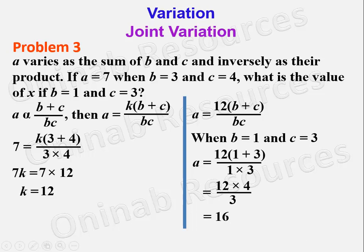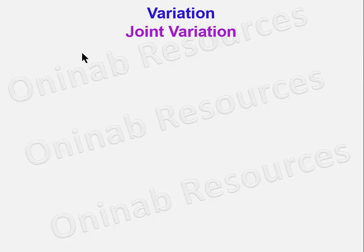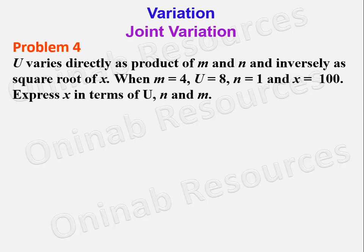Problem 4: u varies directly as the product of m and n and inversely as the square root of x. When m = 4, u = 8, n = 1, and x = 100, express x in terms of u, n, and m.